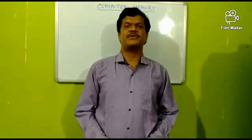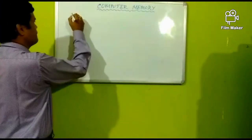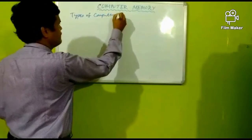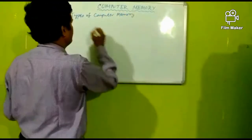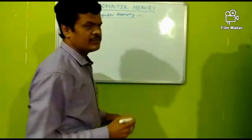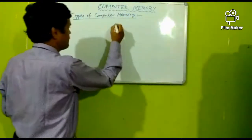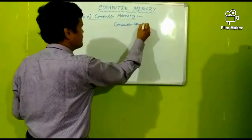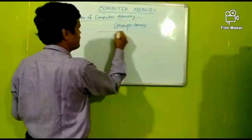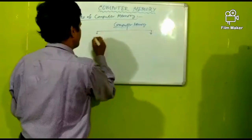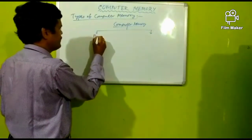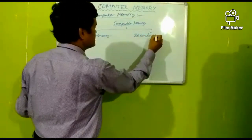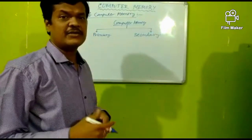Types of computer memory. Computer memory is of 2 types: primary memory and secondary memory.